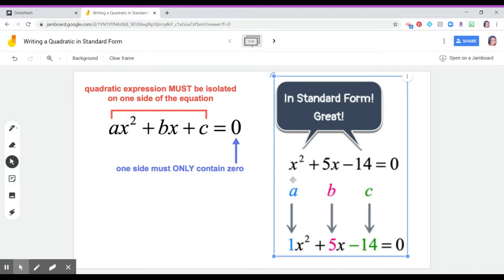And then we want from there to eventually be able to identify our a. Because there was no number in front of x squared, we just have a 1. The b is going to be 5, and the c will be negative 14.